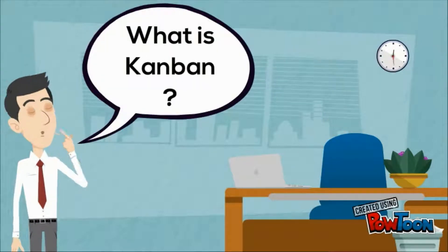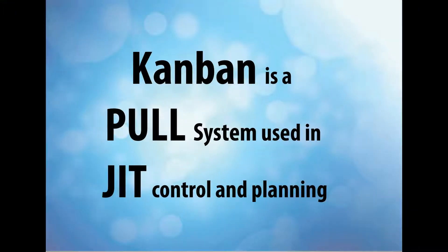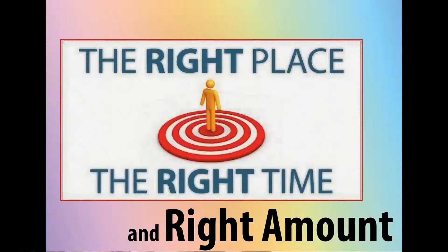What is Kanban? Kanban is a type of pull system that is used in just-in-time control and planning. This method is known as the Supermarket Method. Kanban simply means to have a product made at the right place, at the right time, and in the right amount.